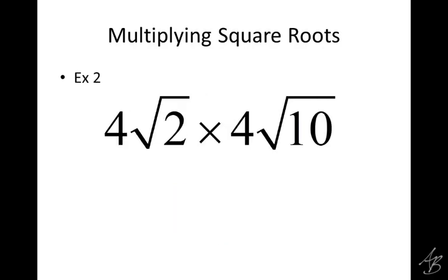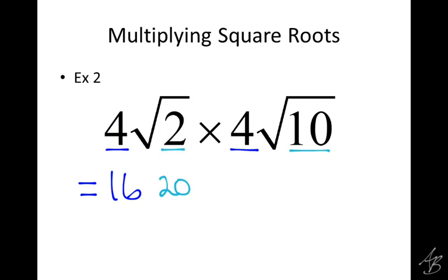In this next example, we've got two numbers that both have square roots in them. We're going to do the same thing. We'll start by multiplying the coefficients together. What is four times four? Sixteen. And then we'll multiply the radicands together. What is two times ten? Twenty. And that twenty we got by multiplying the radicands, so it needs to be in the square root. Then, just like the last one, we need to check to see if we can simplify it.